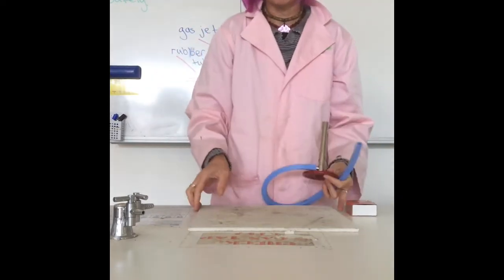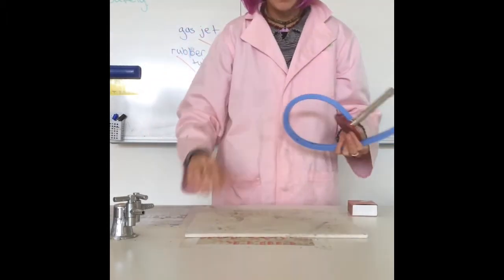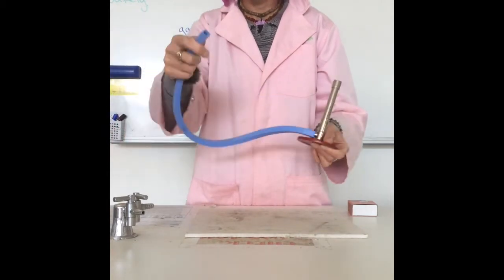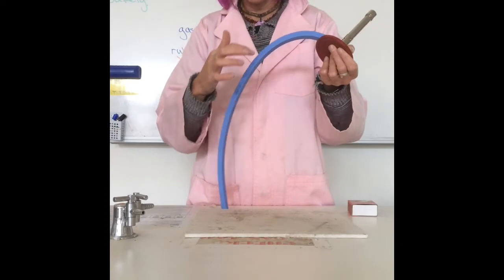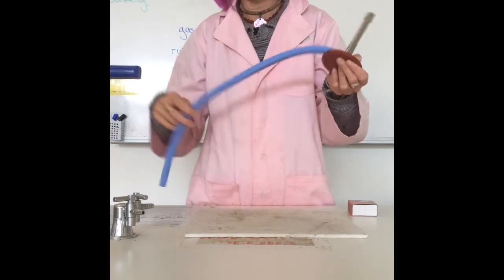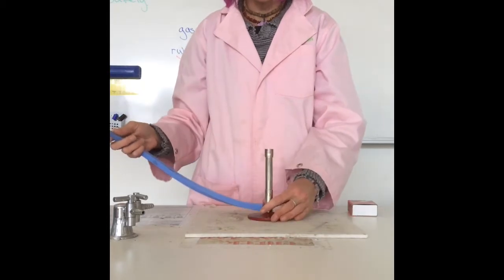The next step is to get your heatproof mat. And you're going to check the rubber tubing for cracks. This end and this end is really important to check. And if there's a curve in it, always along the curve, there are places where it might crack.